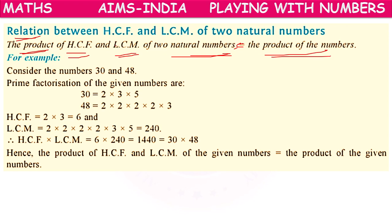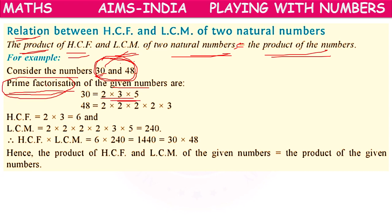If the given numbers are 30 and 48, what we have to do? We have to do prime factorization of the given numbers. What is prime factorization? Writing the given number as a product of its prime numbers is called prime factorization. For 30 and for 48, we have to do prime factorization, and we will get some prime factors.